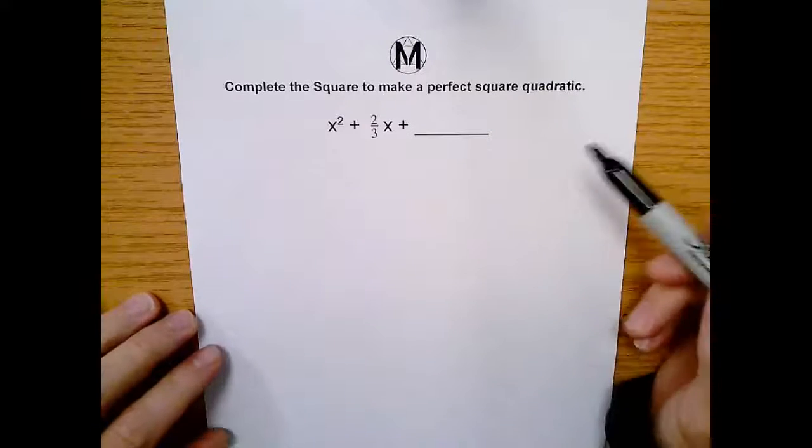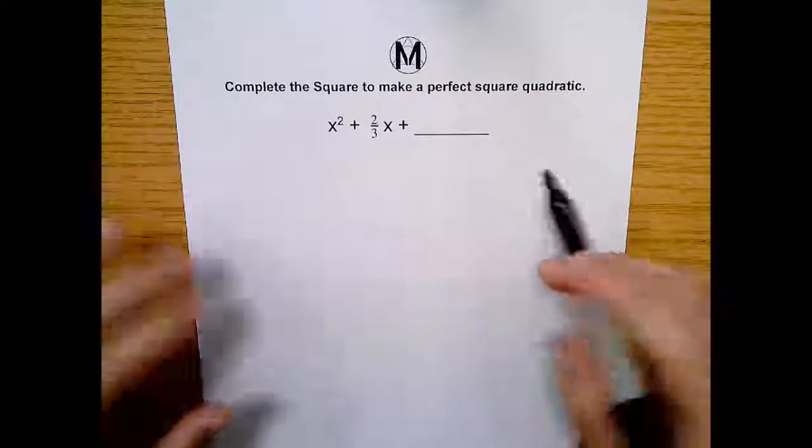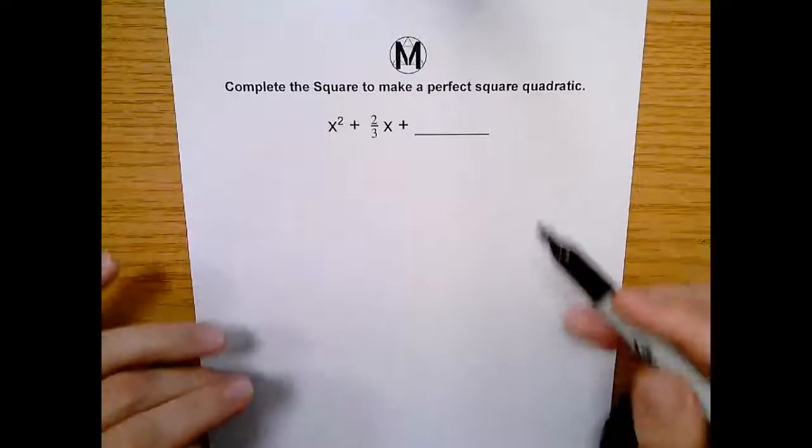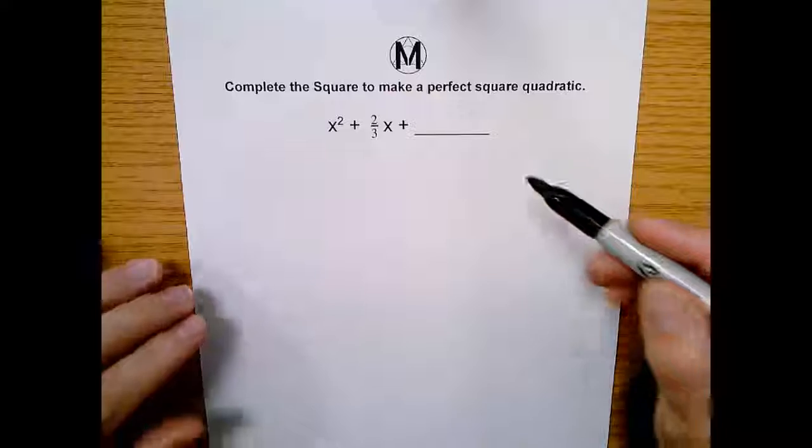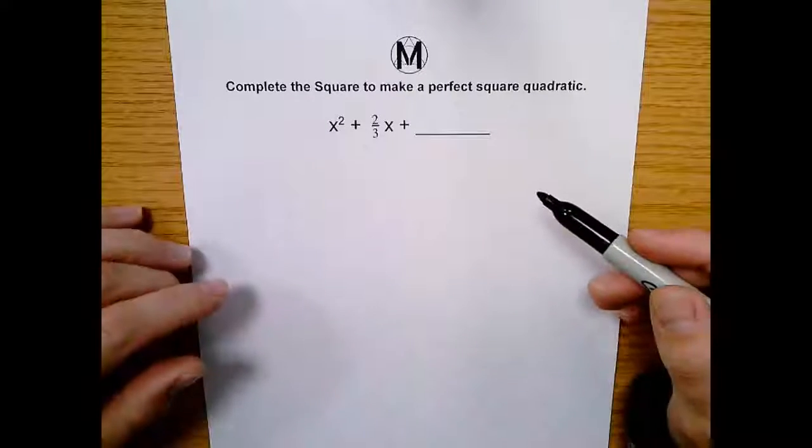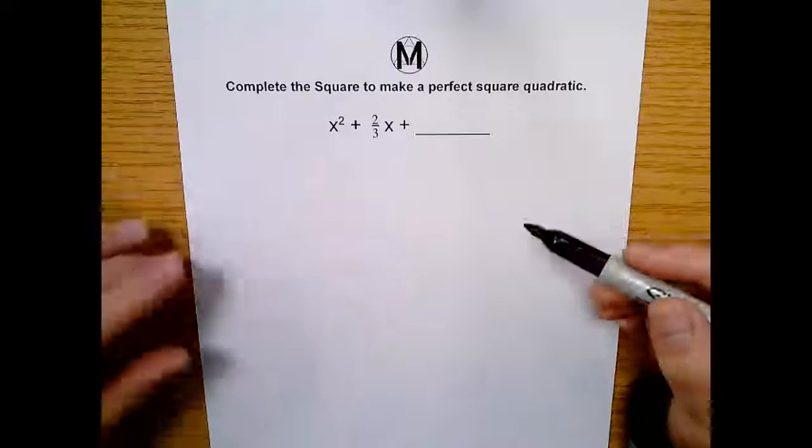Alright, this is a foundational skill that you'll use later when you try to solve quadratics and find the x-intercepts. And the method is called completing the square. This is just the first step of that method. Like I say, it's a foundational skill.